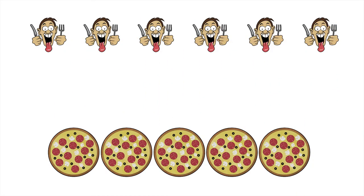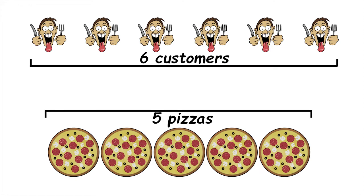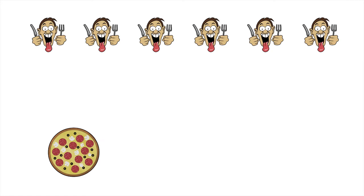Let's see if we can help Peppy. There are six customers and five pizzas. We want to divide the pizzas up into equal size slices and share them out so each customer gets the same amount of pizza. Let's deal with one pizza at a time. There are six customers, so let's divide the first pizza up into six equal sized slices.